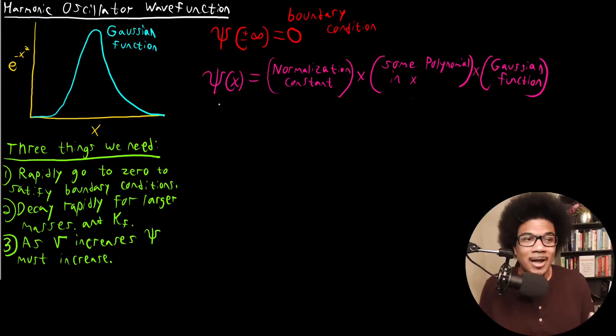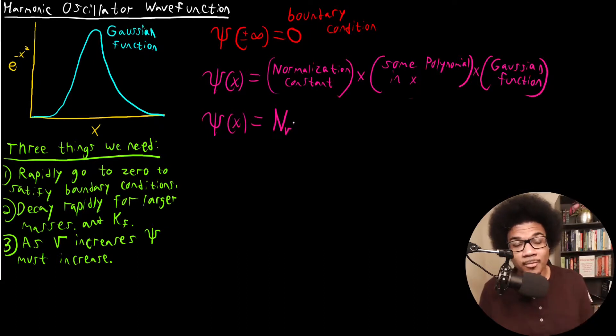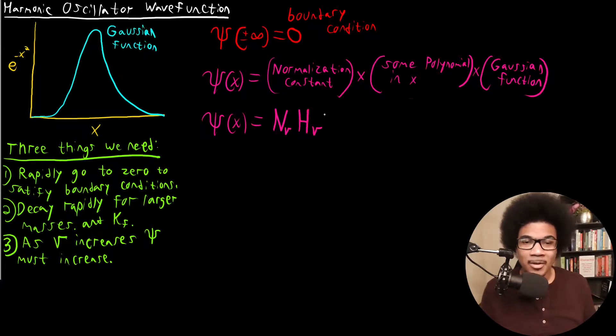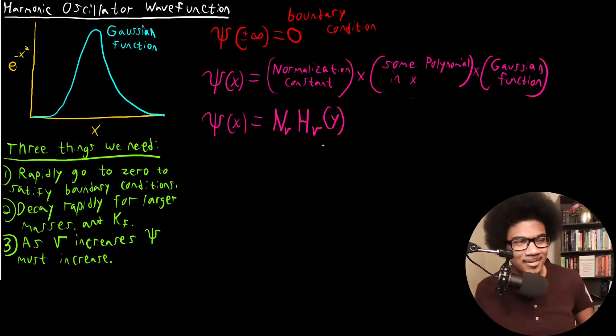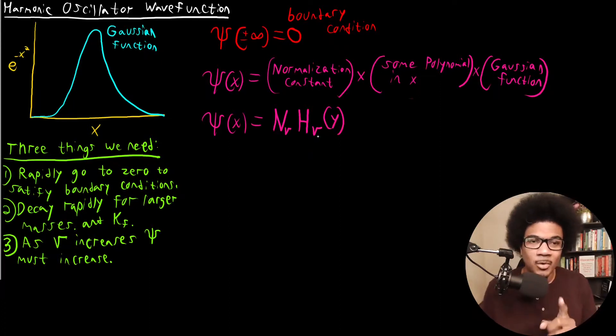Okay. So those are the general pieces. Now to the actual nuts and bolts of it. So this wave function will have the following form: we'll have our normalization constant, which will depend on the quantum number nu. We'll have something called the Hermite polynomial, which is a very mathy series of polynomials—something that I will discuss in more detail in the next video. But these are called the Hermite polynomials and they're a function of a variable Y. Like I said, we'll introduce this in the next video. And then at the end, we have a Gaussian function that is also going to be a function of Y. Now Y in this case is related to X.